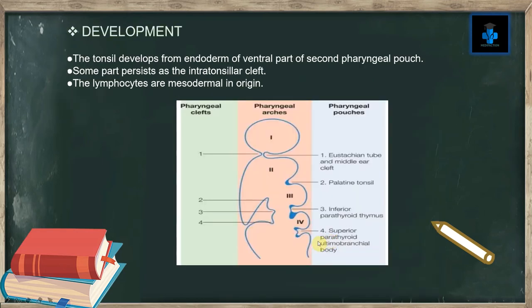Development: The tonsil develops from the endoderm of the ventral part of the second pharyngeal pouch. Some part persists as the intra-tonsillar cleft. The lymphocytes are mesodermal in origin.